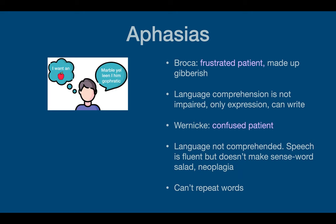There are a bunch of different aphasias. The first is Broca's aphasia — this is a problem with elaborating thoughts. The patient is going to be frustrated. Language comprehension is there; they understand what they're saying and what you're saying, but they can't express it. It's also called expressive aphasia. They can write, so if the patient is frustrated, provide them with pen and paper.